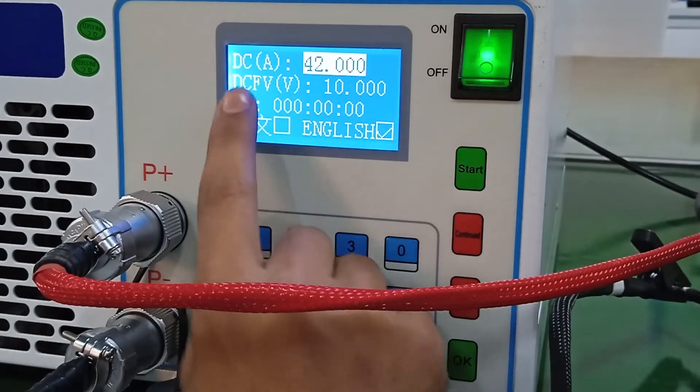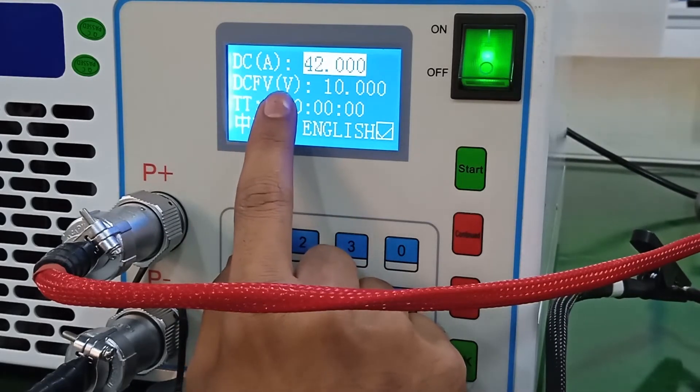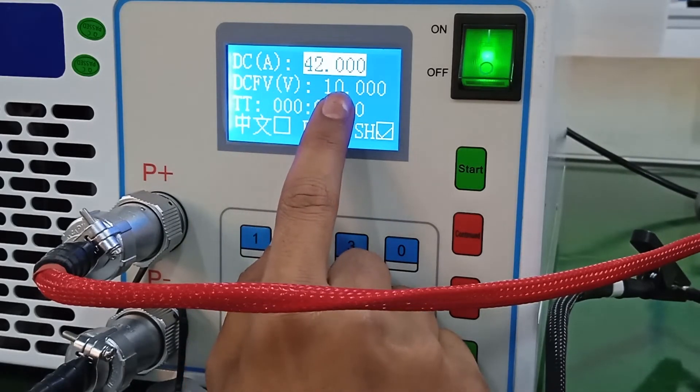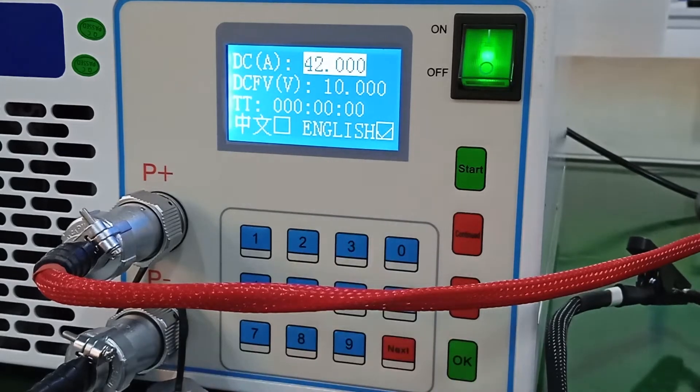And then there is a DC voltage limit. You can set up to 100. This machine limit is up to 100 volts. So, you can set up to 100 volts and 50 amps maximum.